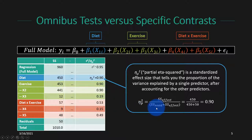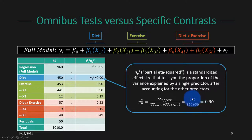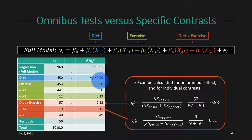Conceptually, what this is saying is: how much error would we have left over if we hadn't accounted for this variable? If we hadn't included diet in our model, the sum of squared errors of the residuals would equal what it currently is plus all the variability explained by diet. So we're adding the variance explained by diet back into the residuals. In this case, 450 is explained by the effect plus 50 in residuals, so 450 divided by 500 equals .90 — diet explained 90% of the remaining variance. This calculation applies both to individual contrasts and omnibus contrasts.